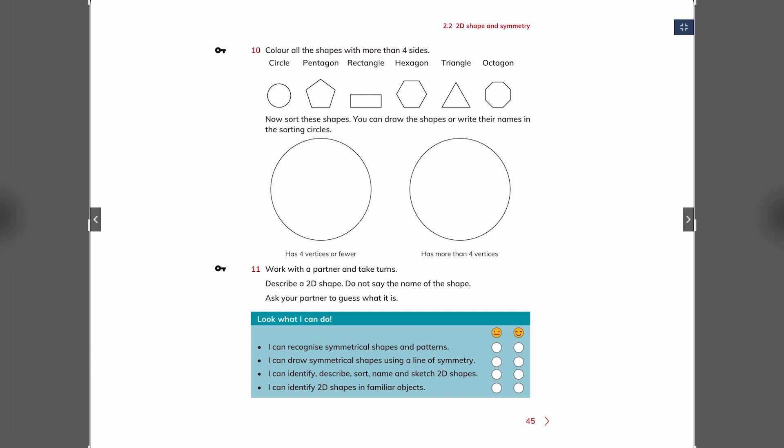You color those shapes that have more than four sides. For example, pentagon have five sides, hexagon have six sides, octagon have eight sides. You color them all right. You do not color the other.